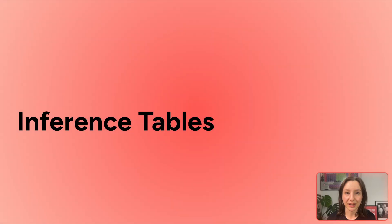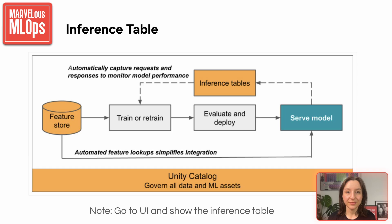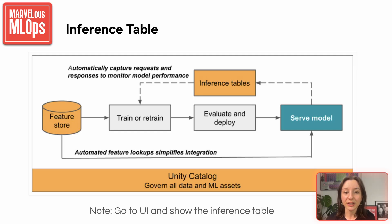We're moving on to inference tables. Inference tables are a built-in feature to log model inputs and predictions from a serving endpoint directly into a Delta table in Unity Catalog. This provides a simple way to monitor, debug, and optimize models in production. Once enabled, they automatically capture request and response payloads, as well as metadata like response time and status codes. Enabling them is very easy — you need to check 'enable inference table' when editing a serving endpoint, as we did in lecture 6. But remember, the workspace must have Unity Catalog enabled, and you would need the right permissions to create and manage the associated Delta table.